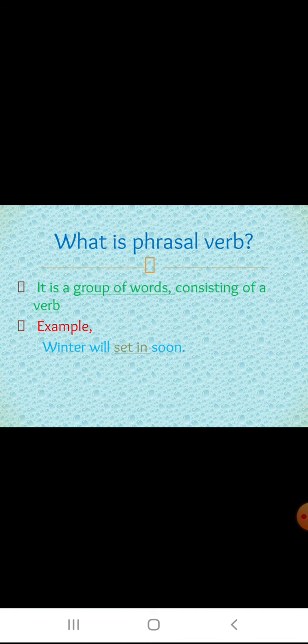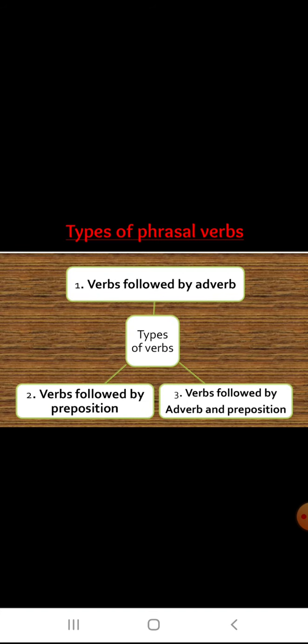What is a phrasal verb? It is a group of words consisting of a verb. For example: 'Winter will set in soon.' Here 'set' is a verb and 'in' is a preposition. So 'set in' is a phrasal verb. Now let us see the types of phrasal verbs.